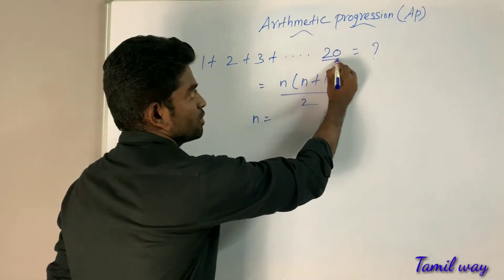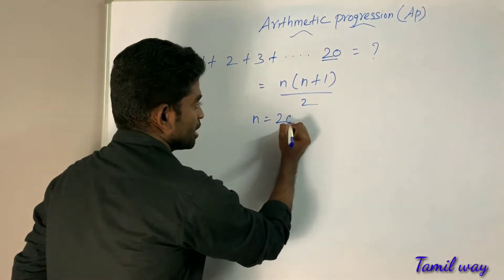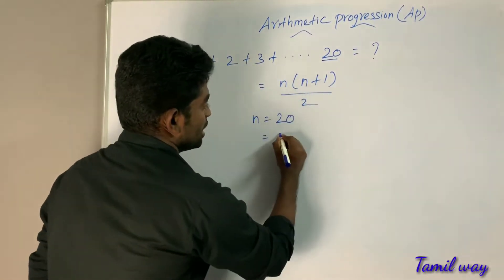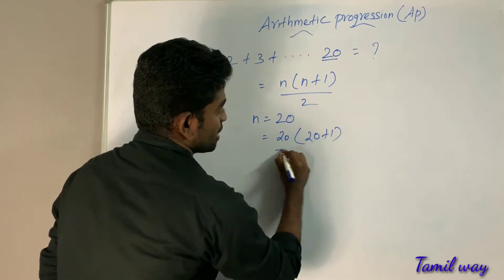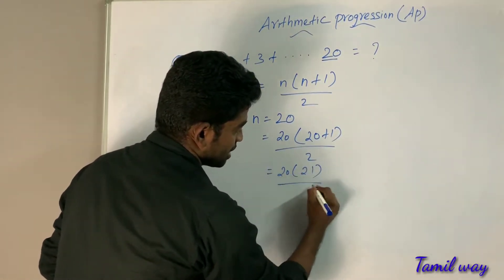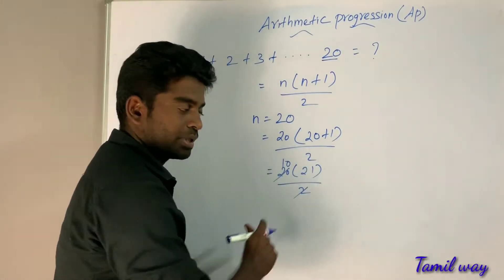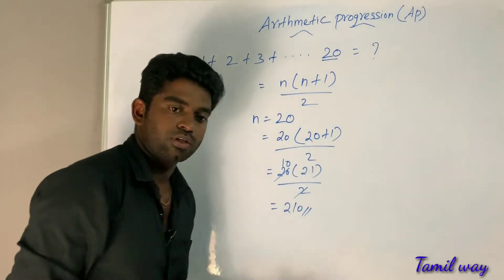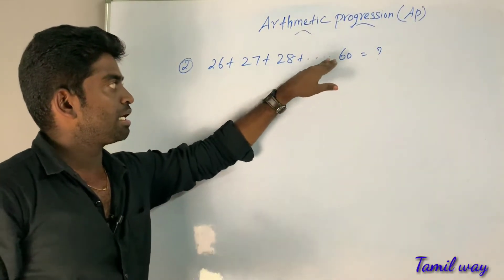N equals 20. So substitute: 20 into 21, divided by 2. Cancel 2 — 2 goes into 20 ten times. So 10 into 21 equals 210. Answer: 210.